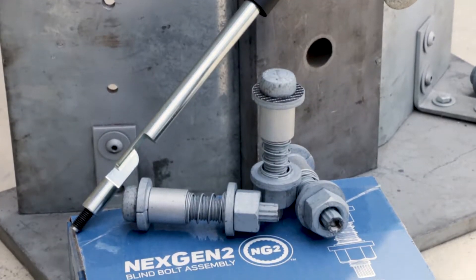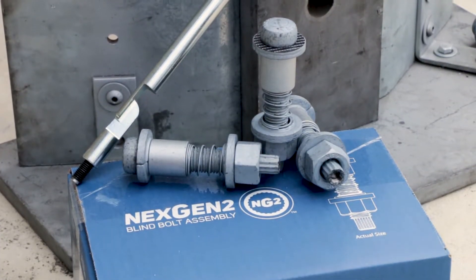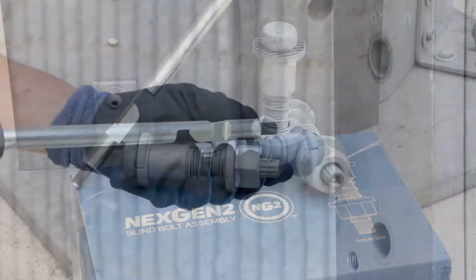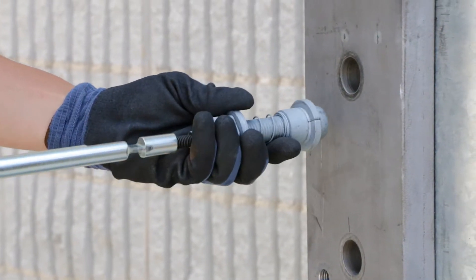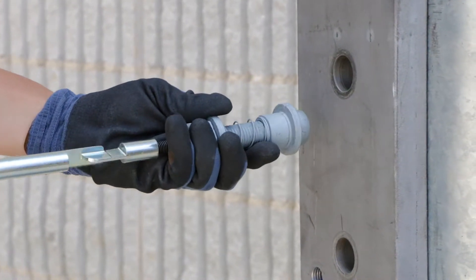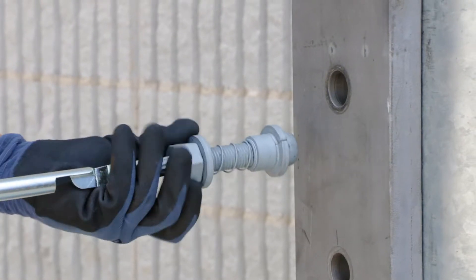The NextGen2 bolt used in the monopole cell tower maintenance industry is a market leader for blind bolting. The NextGen2 removes the frustration of installing bolts in small, difficult-to-maneuver-in spaces.